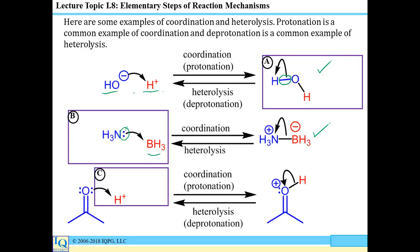Coordination can also involve a charged species and a neutral species, so there's nothing constraining us with respect to the type of species involved. For example, the oxygen of a carbonyl can donate electrons to a proton, leading to the formation of a new sigma bond. Heterolysis would occur if the proton were to come off, pushing those two electrons back onto the oxygen as a lone pair again.